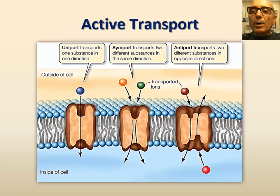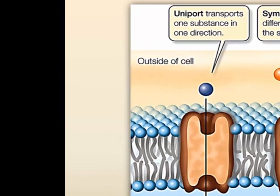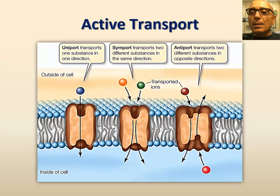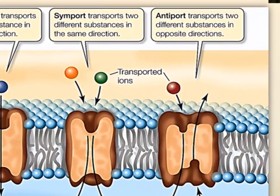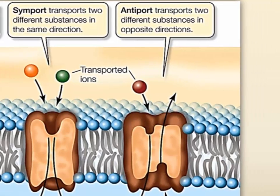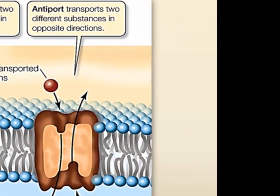The first is a uniport system, which involves the movement of one substance in only one direction. The second system is a symporter, which is a protein system that moves two substances in the same direction and at the same time. The third active transport system is an antiporter, which moves two substances in opposite directions.